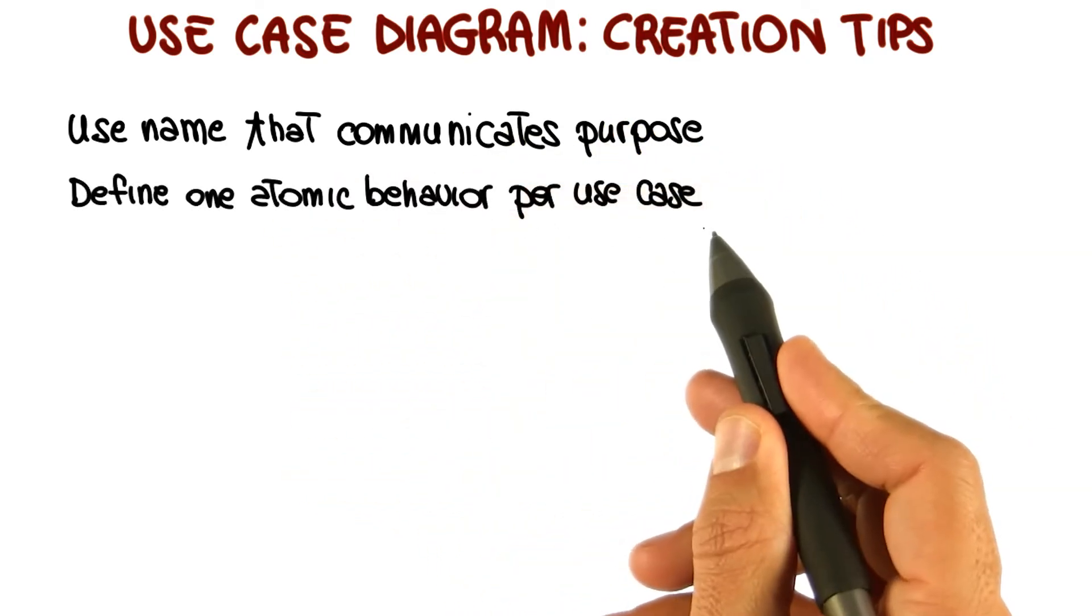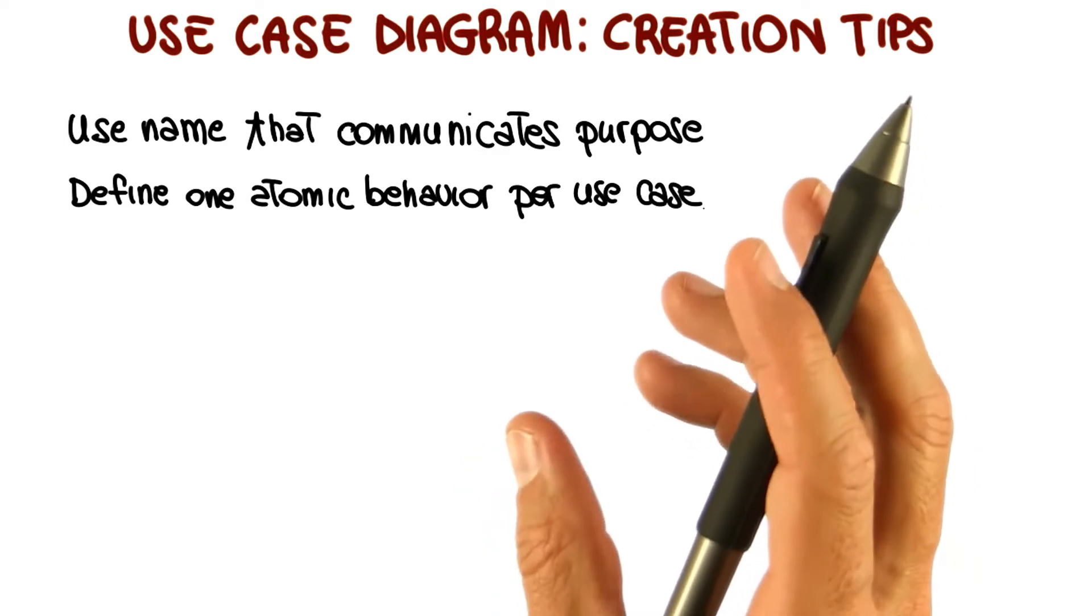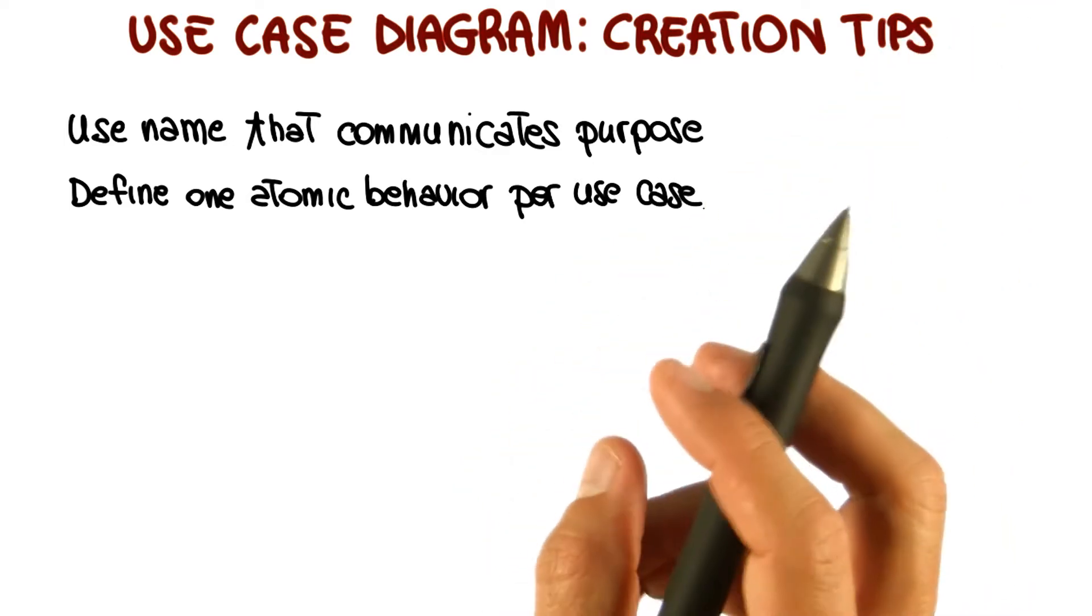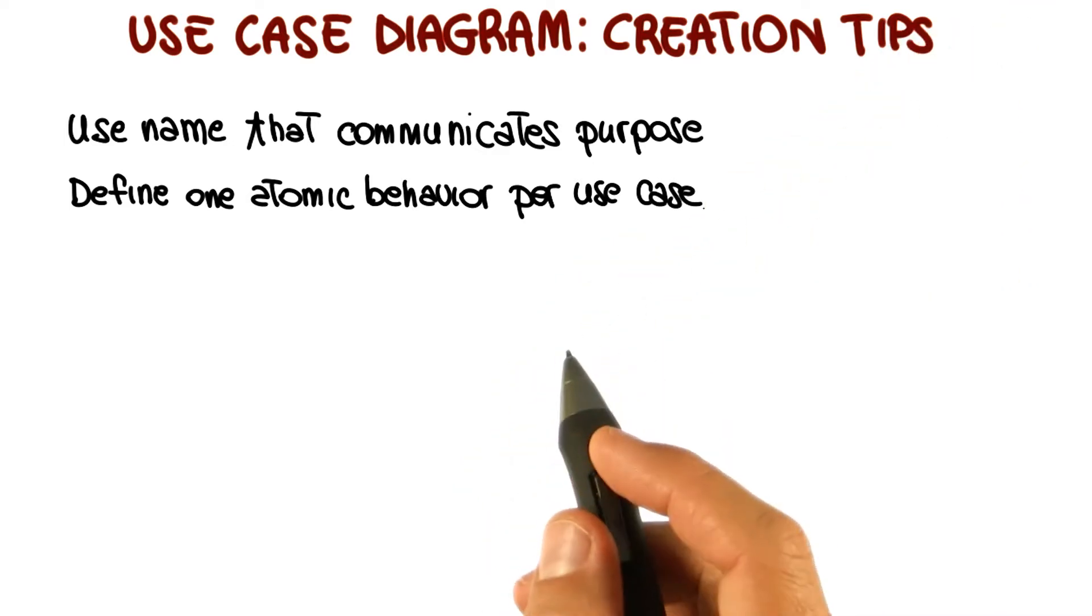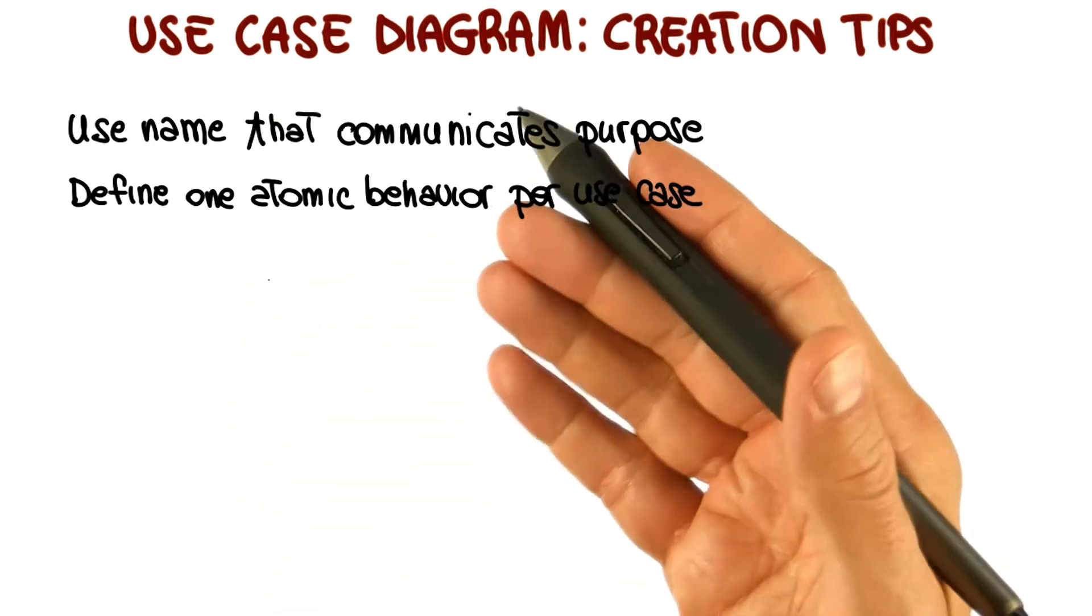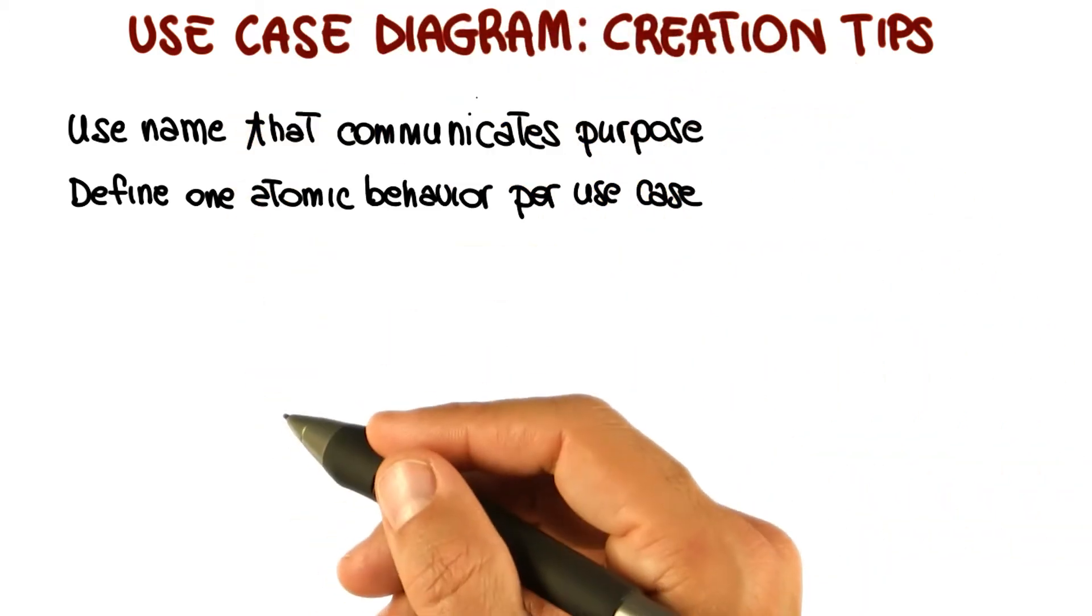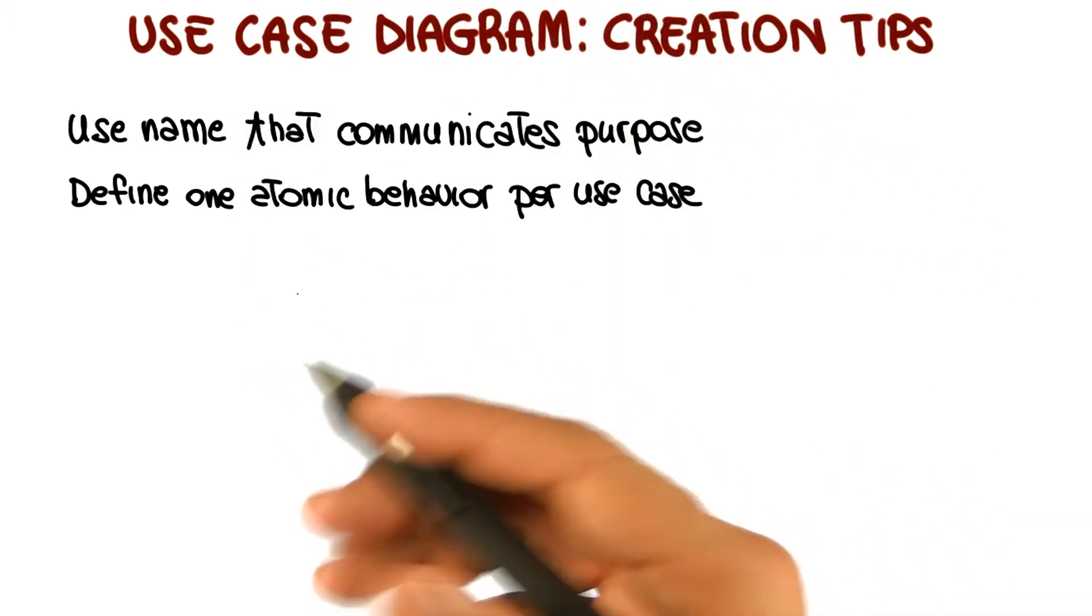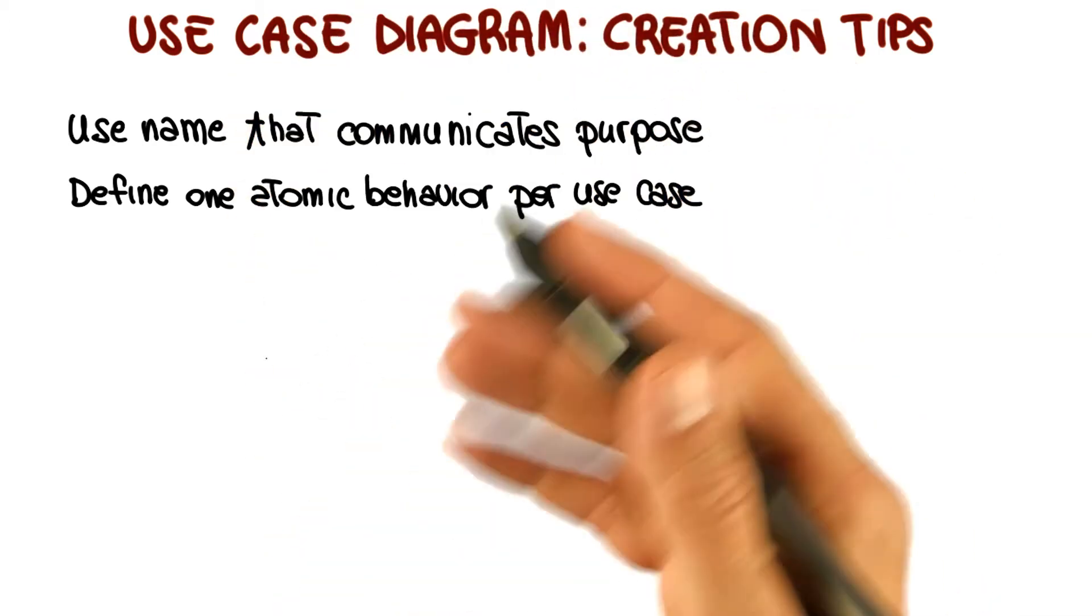Second tip is to define one atomic behavior per use case. Try not to put more than one specific scenario into a use case. Why? Because this will make the use cases easier to understand and better suited for the roles that we just discussed: to define test cases, to do planning, to define an architecture, and so on.